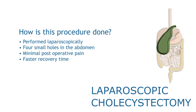If there are no stones present in the bile duct, the cystic duct is divided after sealing it with metallic clips. The cystic artery is clipped and divided, and the gallbladder is removed from the bed of the liver with a cautery device or laser.